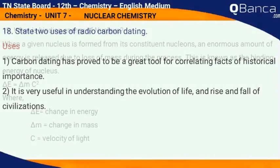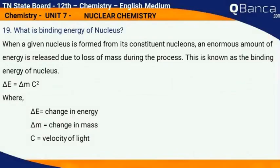What is binding energy of nucleus? When a given nucleus is formed from its constituent nucleons, an enormous amount of energy is released due to loss of mass during the process. This is known as the binding energy of nucleus. Delta E equals delta M times C squared.